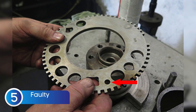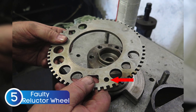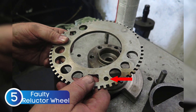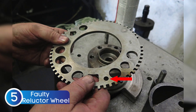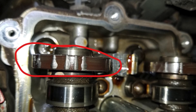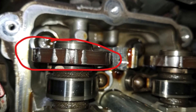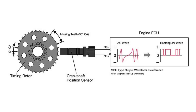The fifth cause is a damaged camshaft position sensor reluctor wheel. This is the part mounted on the camshaft that the sensor reads to determine its position. If the reluctor wheel is cracked, bent, misaligned, or has missing teeth, the sensor won't be able to produce an accurate signal. This can confuse the ECU and trigger the P0347 code, even if the sensor itself is perfectly fine.